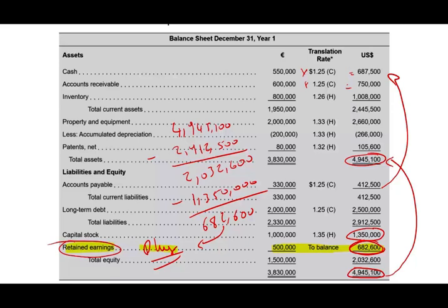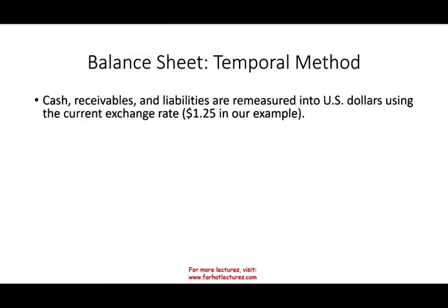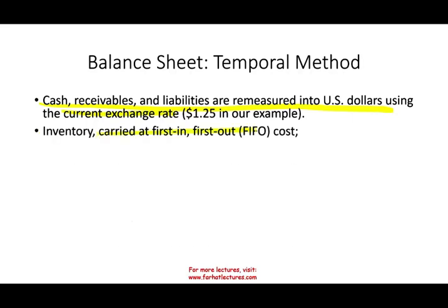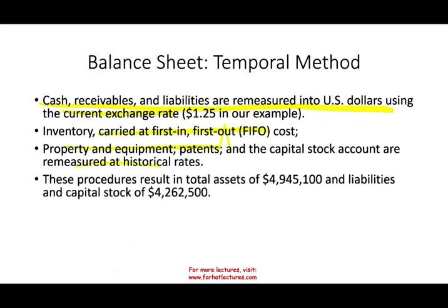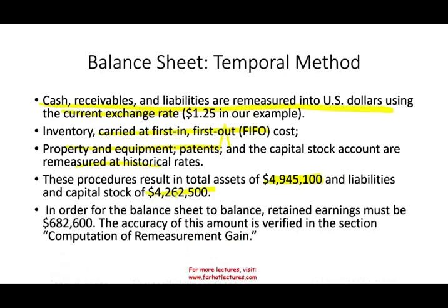To summarize: cash, receivables, and liabilities are measured at the current rate (monetary items); inventory is carried at cost using historical rate; PP&E and patent are carried at historical rate from whenever those transactions occurred. This procedure resulted in $4,945,100 in assets and liabilities plus capital stock of $4,262,500. The plug was retained earnings of $682,600, and this is how we'll compute the remeasurement gain.